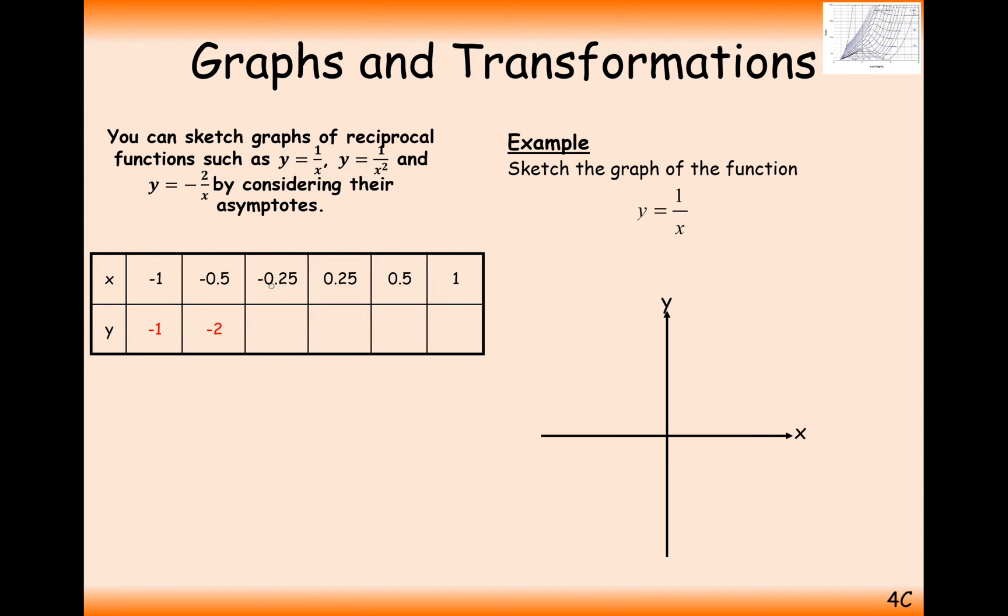When x is minus 0.25 or a quarter, that's going to give us minus 4. So you can see here what's going to happen is as x gets smaller, the y coordinate here is going to get bigger.